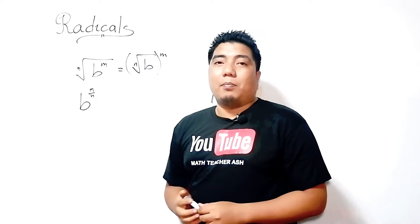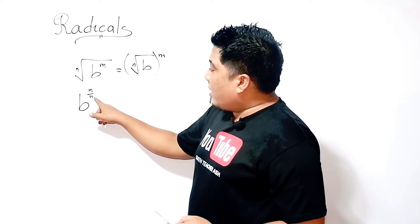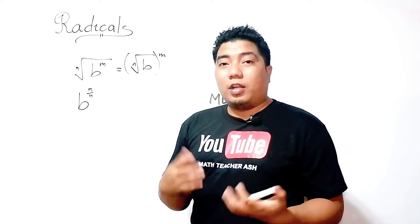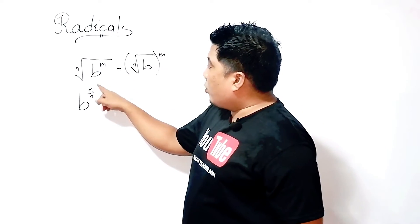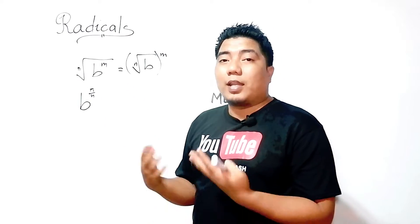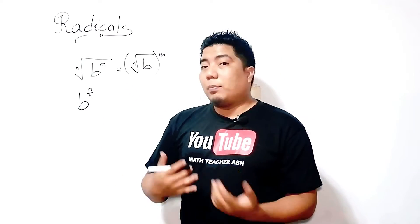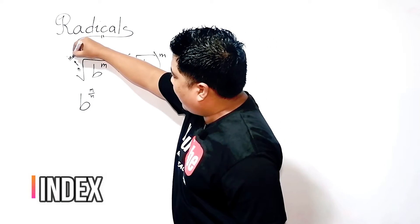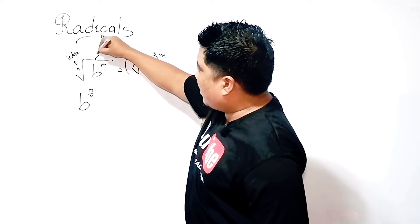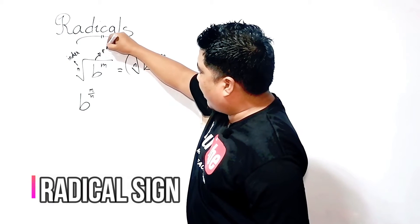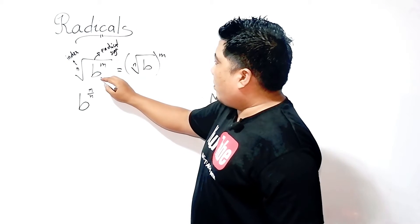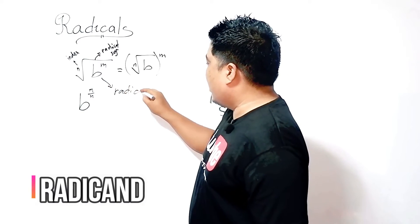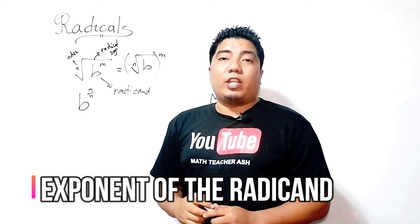Or we could write this as the nth root of b, quantity to the power of m. These are just the same. As you can observe, the n here — which is the denominator — becomes the root of your radical sign, and m here will be the exponent of the radicand. Let me introduce the parts of a radical expression: n here is what we call the index, this symbol is known as the radical sign, b is the radicand, and m is the exponent of the radicand.